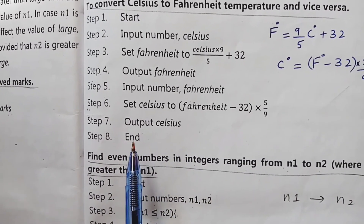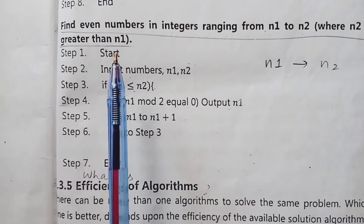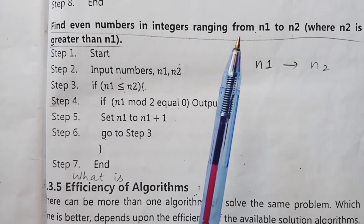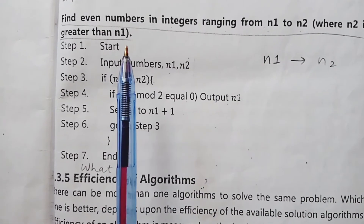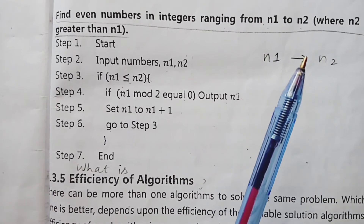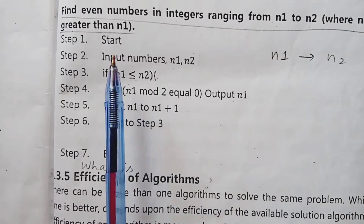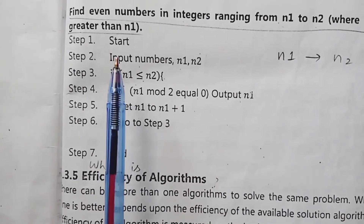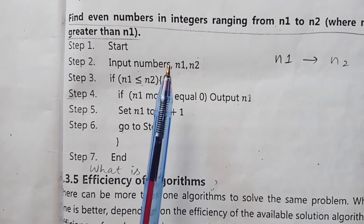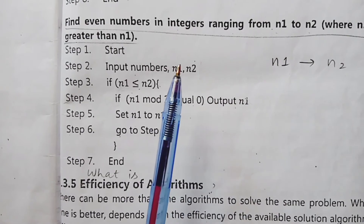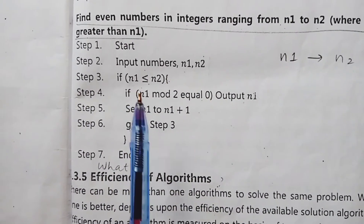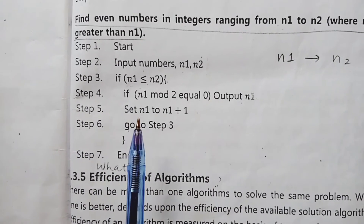Step number 8 is the end of the algorithm. Example number 9 is to find even numbers in integers ranging from n1 to n2, where n2 is greater than n1. Given a range n1 to n2, we have to find even numbers. Step number 1 is start. Step number 2, n1 and n2 are entered — n1 is the starting value and n2 is the ending value of the range.